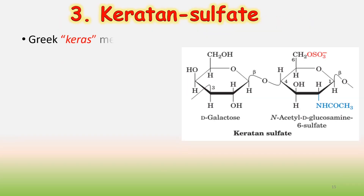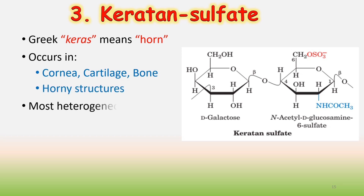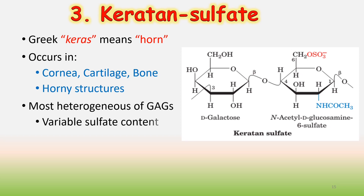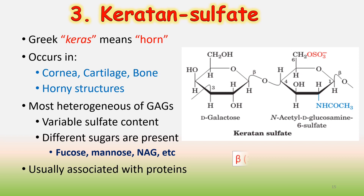The third category is keratan sulfate. Greek keras means horn. It occurs in the cornea, cartilage, and bone — in horny structures. Keratan sulfate is mostly heterogeneous and has variable sulfate content. Different sugars are present such as fucose, mannose, and N-acetylglucosamine. It is usually associated with proteins.